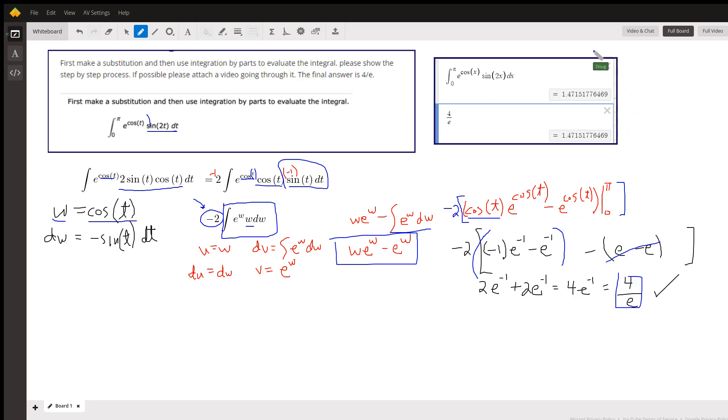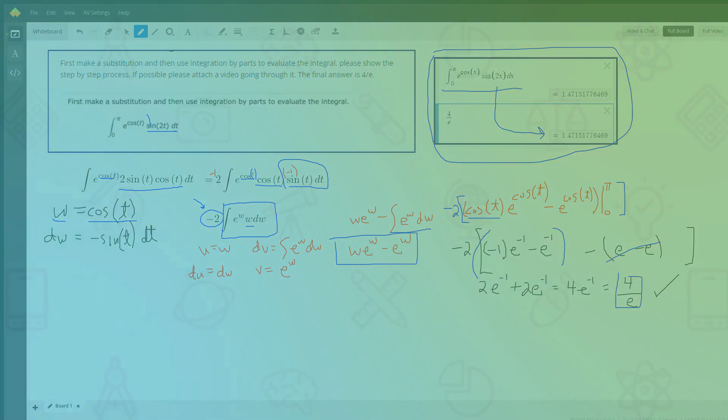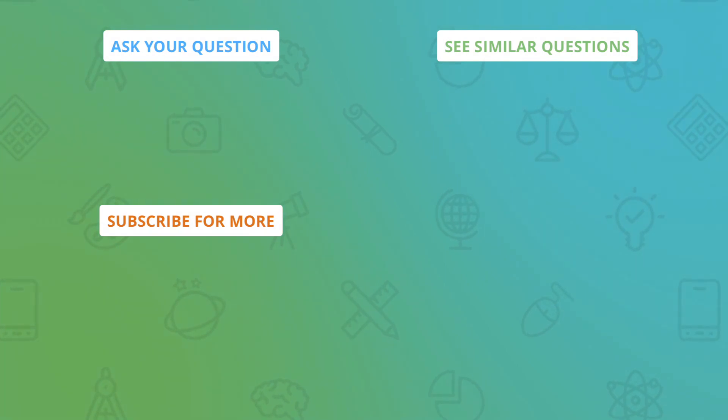I showed that indeed that was the answer we were striving for. This definite integral does indeed evaluate to 4 over e. Okay, there you go. Hope that helped. If you have any questions, post a comment.